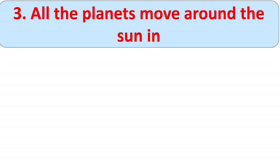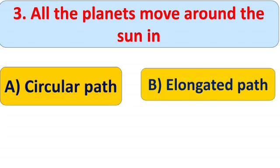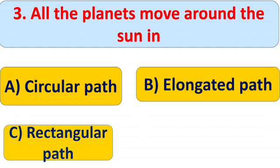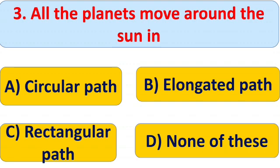Third question: all the planets move around the sun in — A) a circular path, B) an elongated path, C) a rectangular path, and D) none of these. Think about the answer — you can also write the answer in the comment box. The right answer is B) elongated path, or orbit. All the planets move around the sun in a particular orbit.